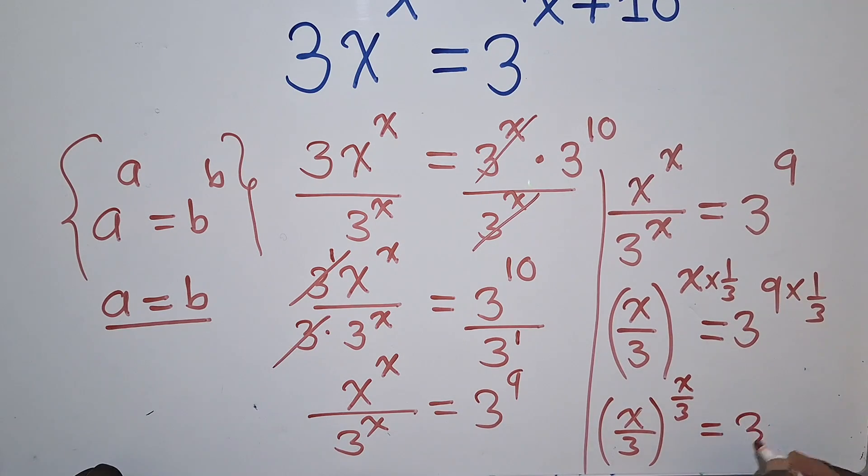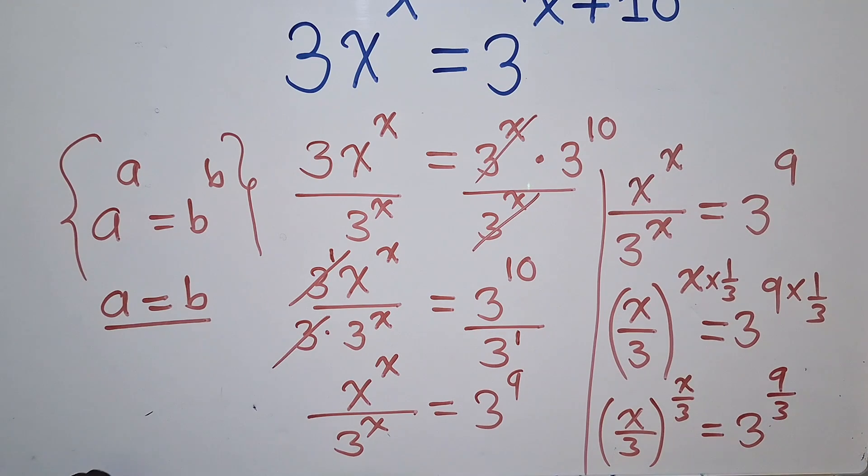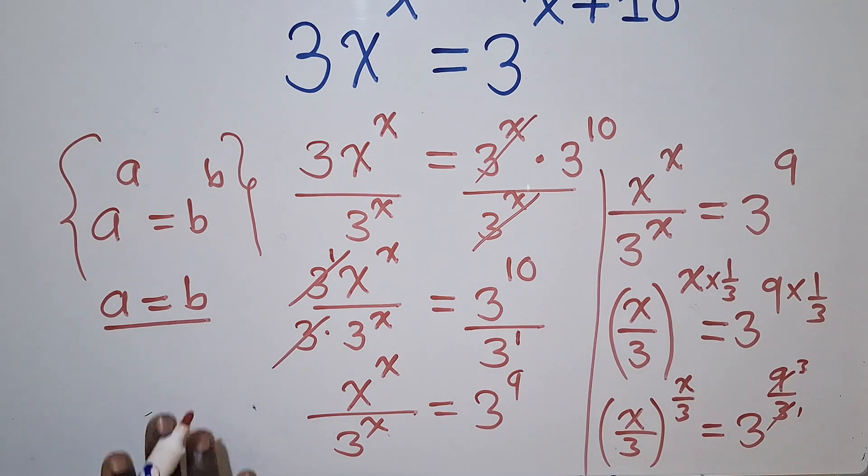And then here it will be this power by this power, it will be X over a 3, which is equal to, here it will be 3. And then the power would be 9 over a 3. So this, of course, 3 into 3, 1 into 9, it's a 3. So you can see,